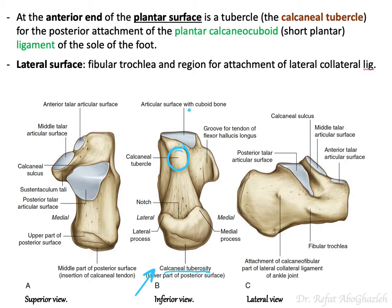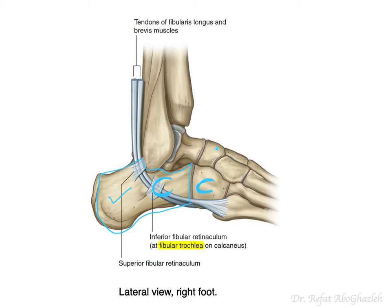The calcaneal tubercle is important because the cuboid bone articulates anteriorly with the calcaneus, and there is a ligament between them — the plantar calcaneo-cuboid ligament, also known as the short plantar ligament. There is also a long plantar ligament that overlaps it.